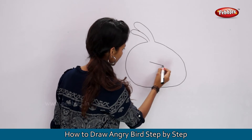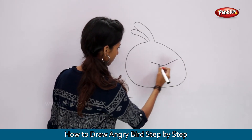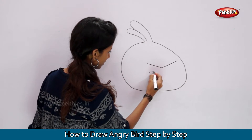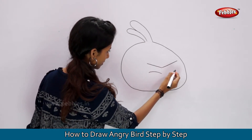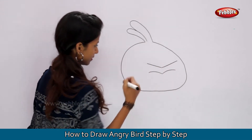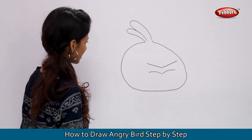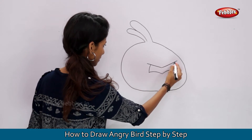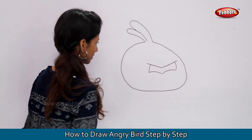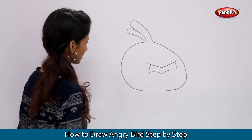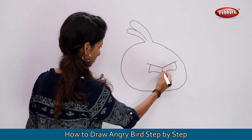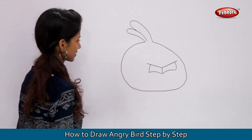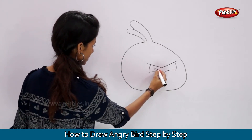Draw two lines for the eyebrows. Two curves for the eyes. Let us complete the eyes. Draw the eyeballs and color it.